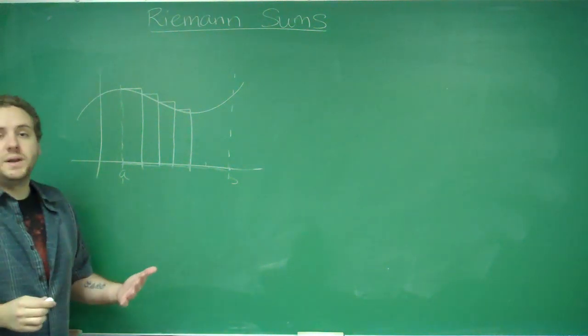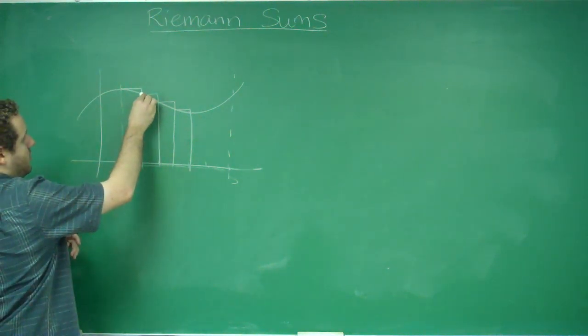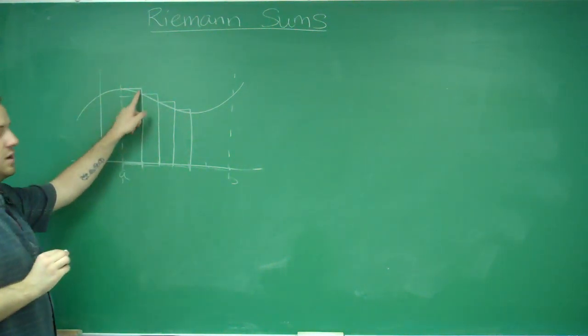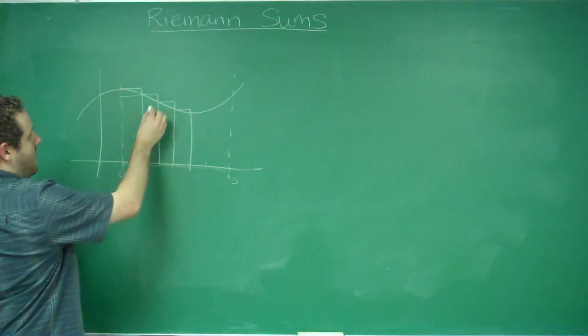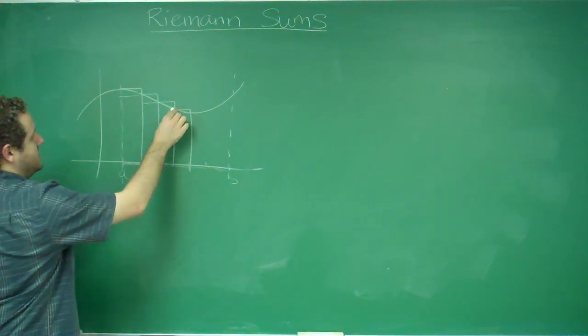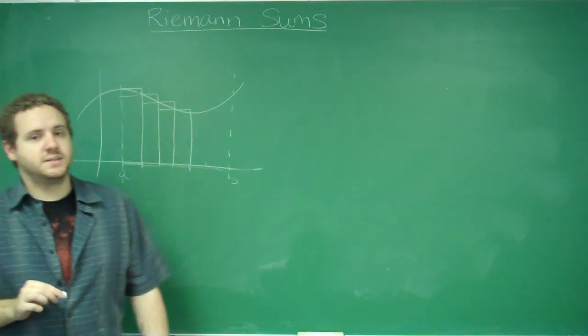If you did the right endpoint instead, this first rectangle would now only be this high, because we would be talking about from the right endpoint. And this one would only be this high, and you can see that our estimate would be under the graph in this case.